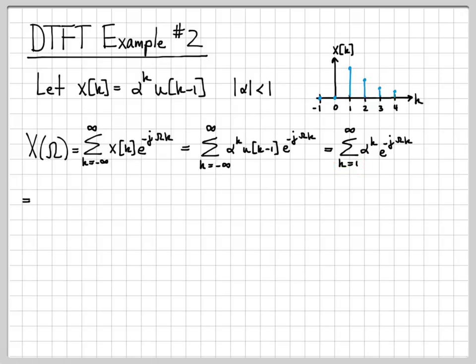So after doing this simplification, I don't have the unit step function because I've used the unit step function to simplify this lower limit. Let's keep going. I can simplify this quantity by noting that both of those quantities are really something raised to the k. That's alpha to the k and then e to the minus j omega raised to the k. So I can put both of those in parentheses and raise their product to the k. So that's just a property of exponentiation.